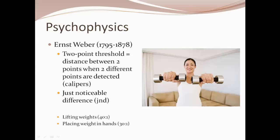That tells us about just noticeable difference with weights, but there are also versions for vision, smell, taste, touch, and sound. Psychophysicists studied that and its applications. You can start to realize that in a factory, it might be important to know how different two signals have to be before someone can tell they are two different signals — or what rate of flashing would create the perception of two separate lights rather than one light on continuously.